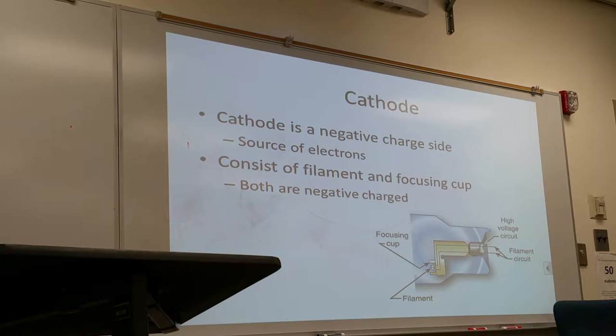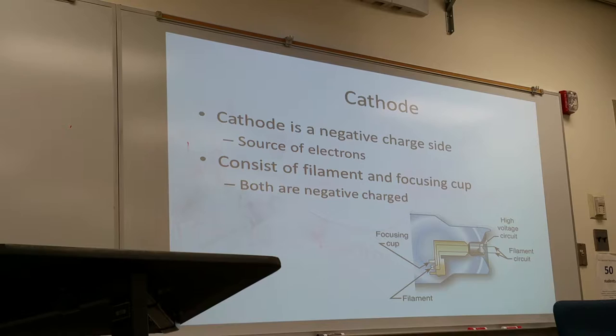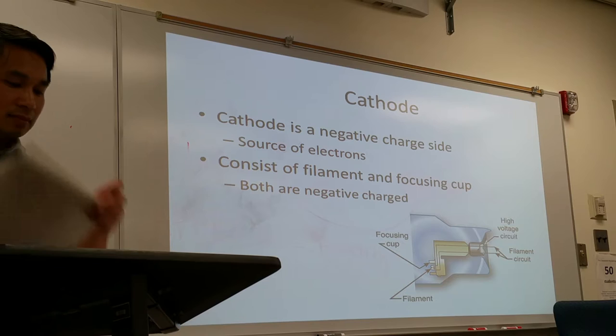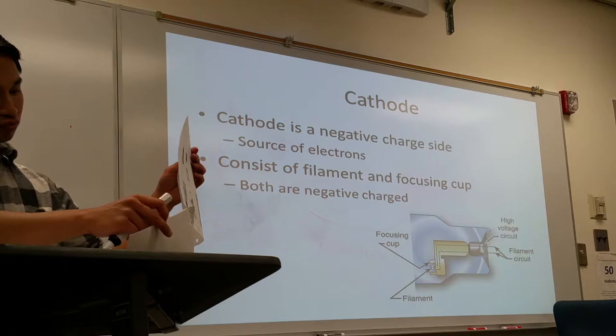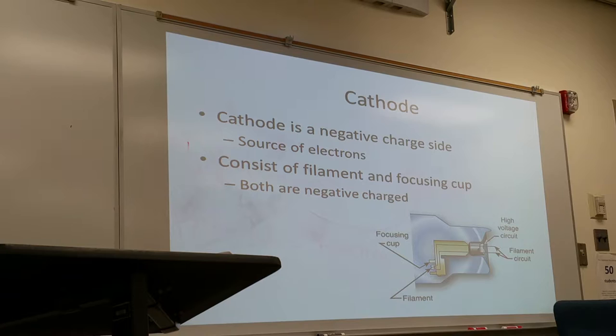The parts inside the envelope: the cathode side is the negative charge side of the x-ray tube. This is where we get the source of electrons to produce x-ray photons. The main components of the cathode side are the filament and the focusing cup. It is negatively charged, and this is where thermionic emission occurs from the filament.